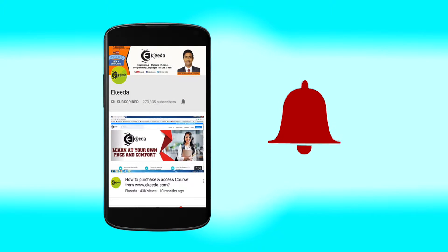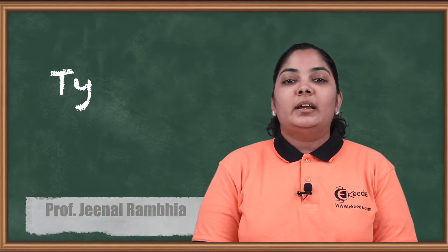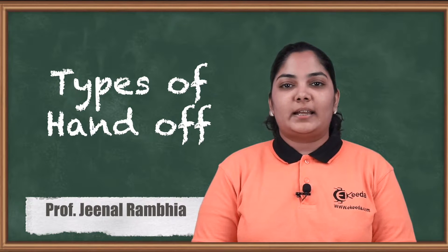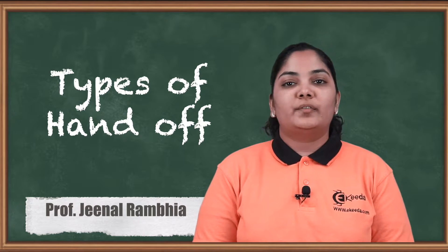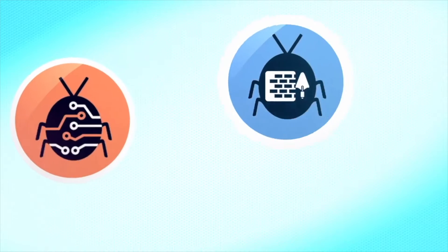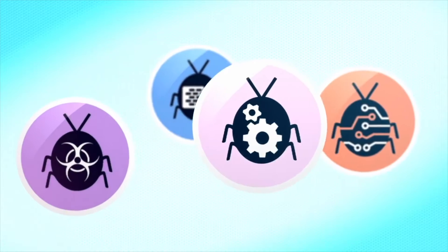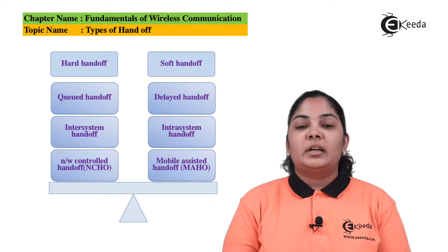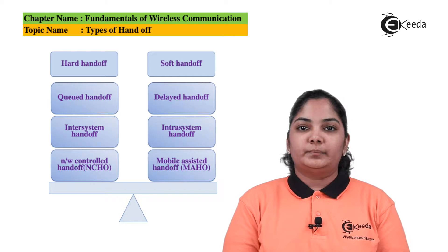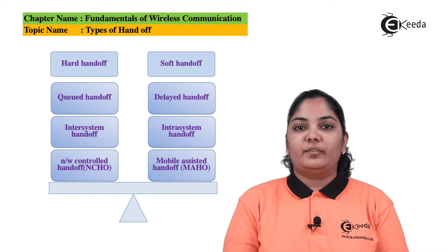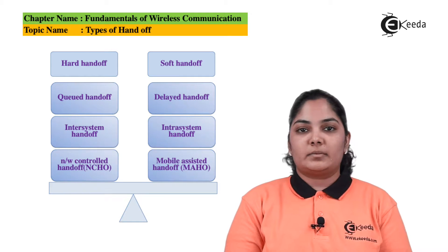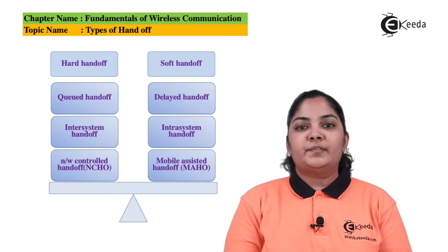In this video we will understand the different types of handoffs that are available to us, and in which scenario which handoff can be used. The various types of handoffs are: hard handoff, soft handoff, queued handoff, delayed handoff, network assisted handoff, mobile assisted handoff, intra-system handoff, and inter-system handoff.